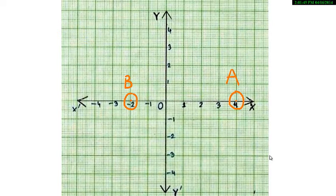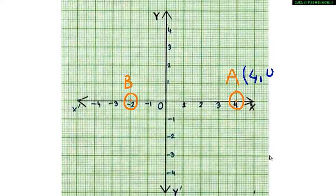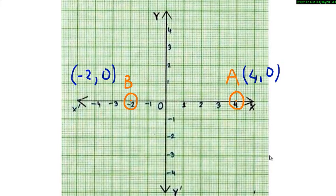Look at the points in the given figure. The point A has moved 4 units to the right of the y-axis, so the distance from the y-axis is 4, and it remains on the x-axis — that is, its distance from the x-axis is 0. So A has coordinates (4, 0). Point B has moved 2 units to the left of the y-axis and has remained on the x-axis. Any point on the x-axis has its y-coordinate as 0. Therefore, the equation of the x-axis is y = 0.